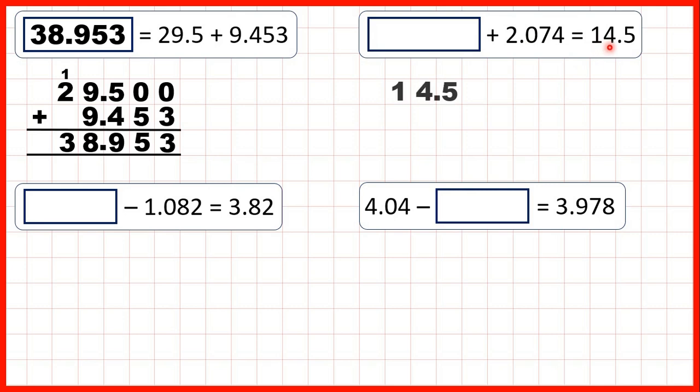We need to work out 14.5 minus 2.074. So we have our decimal points lined up, which means the place values in our question will be lined up as well. We can write zeros in these empty squares, and copy the decimal point down into our answer.